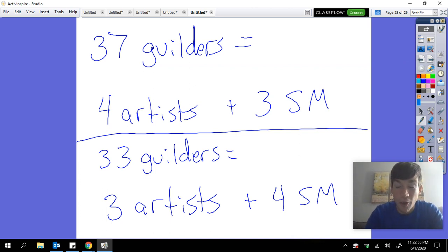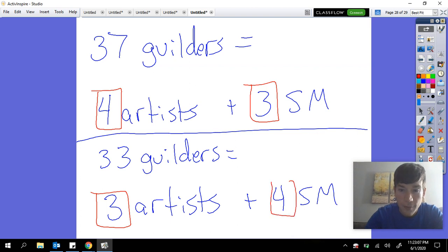But really all we changed from here to here was the number of artists by one and the number of stonemasons by one. In the bottom example there's 3 artists and 4 stonemasons, while in the top example there's 4 artists and 3 stonemasons.